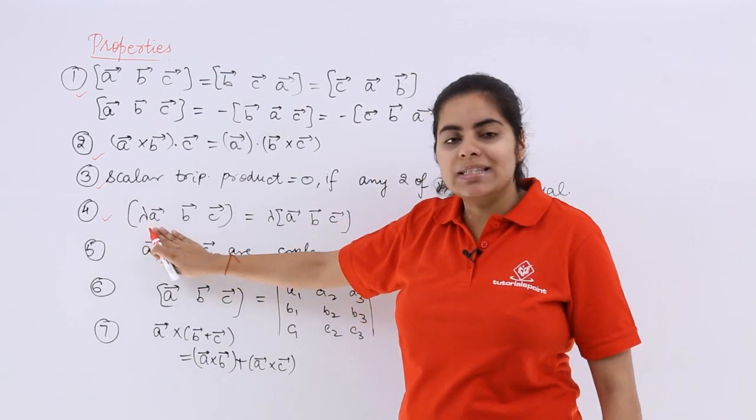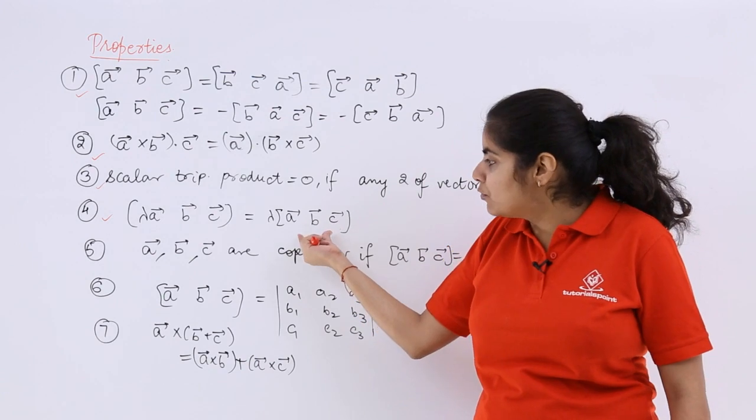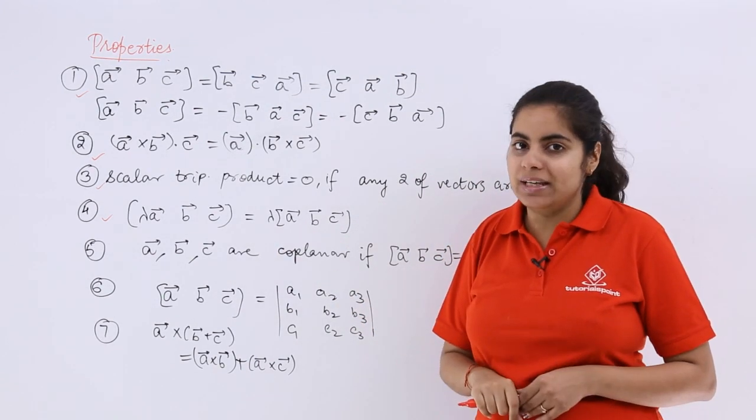Next, multiplication by a scalar with one vector actually means that you can take the scalar outside and then first take the scalar triple product and then multiply the scalar.